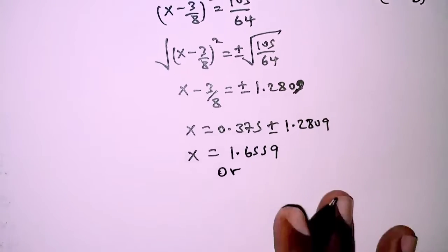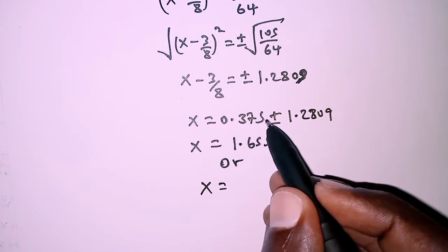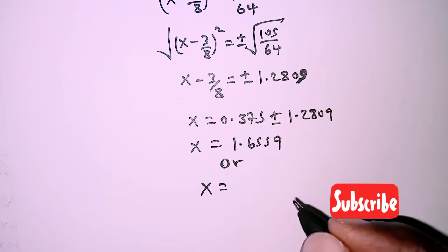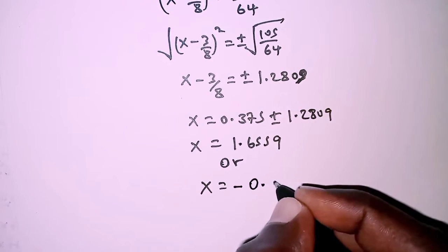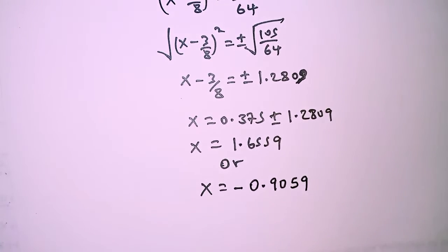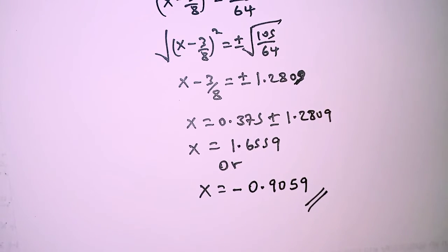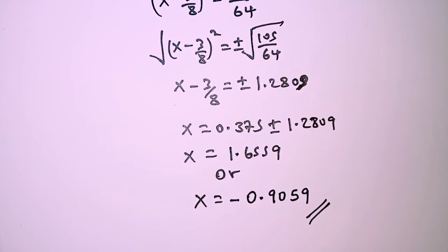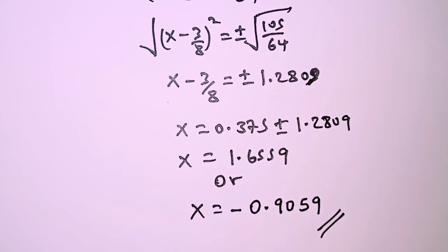The other value of x is 0.375 minus 1.2809, which from the calculator gives negative 0.9059. And finally, we have the solution. That is it for this question — thank you for watching, and hope to see you in the next video.